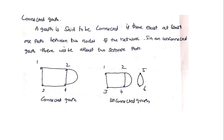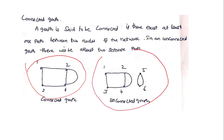Next is the connected graph. A graph is said to be connected if there exists at least one path between two nodes. Between each and every node there is a connection — that is a connected graph. An unconnected graph looks like this: if you want to connect node one and six it is not possible because they are drawn separately with no connection — that is an unconnected graph.